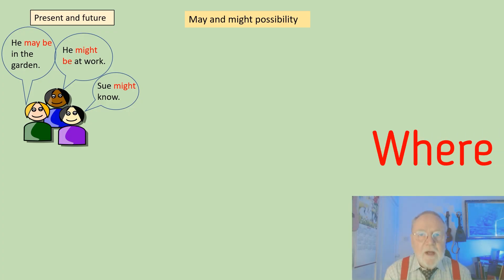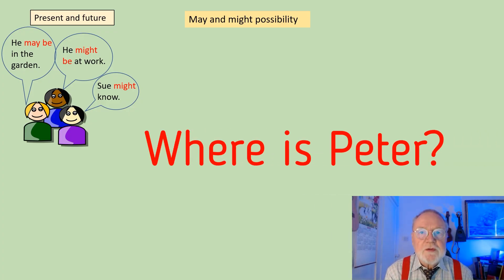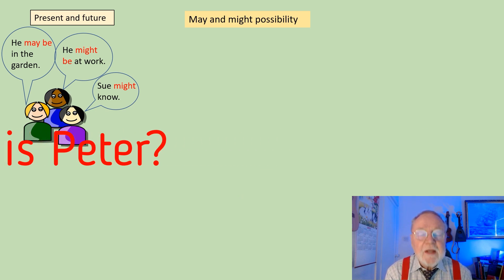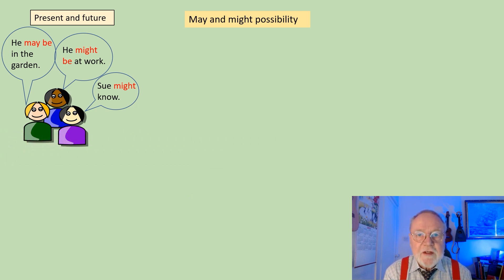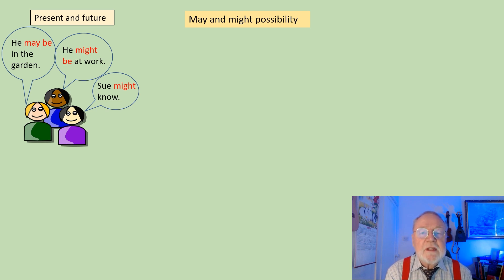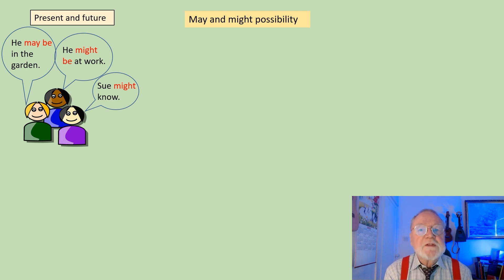Supposing I ask the question: where is Peter? I can answer it like this. He may be in the garden. He might be at work. Sue might know. All these things are possibilities.